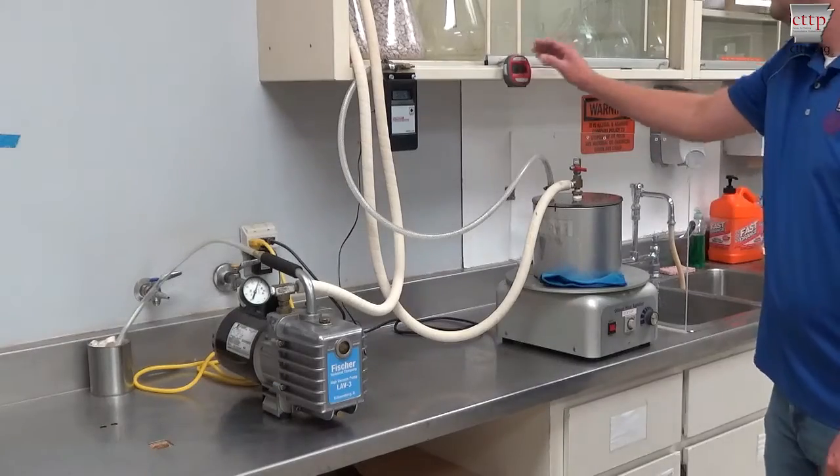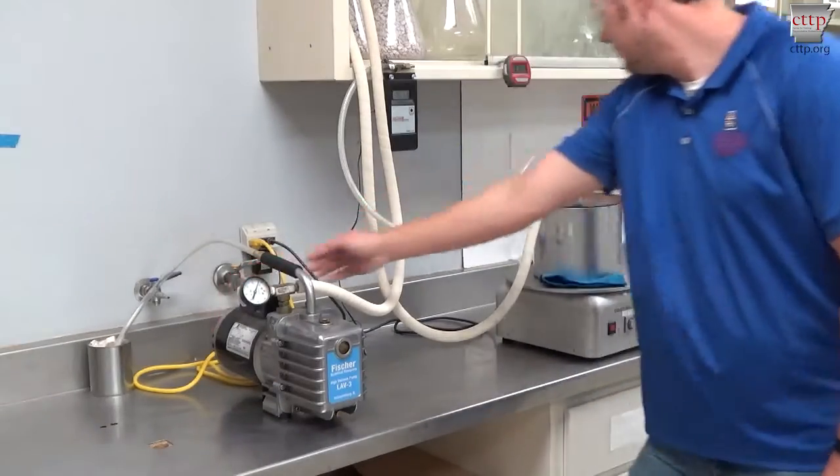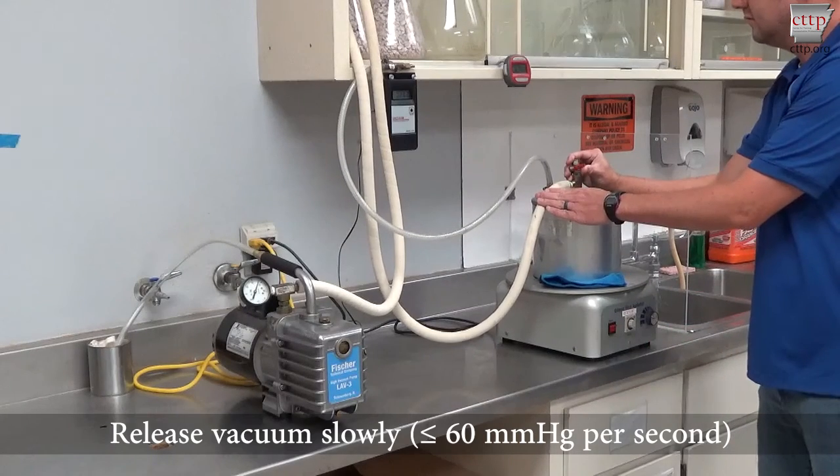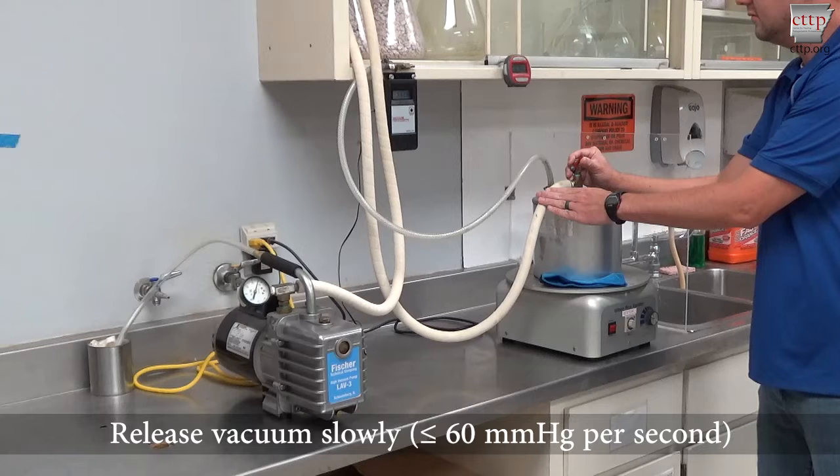When the vacuum period has elapsed, turn off the timer, vacuum pump, and mechanical agitator if used. If vacuum is complete, the water should no longer be boiling.